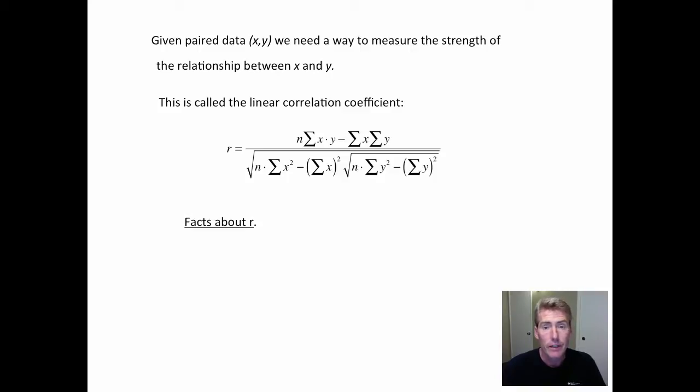So we're going to be given pairs of data, X and Y. And in order to measure the strength of the relationship, being a math class, we need some type of numbers to talk about. The test statistic is called the linear correlation coefficient. All right, hold on. Here it comes. Look at this formula. Yeah. So this is the reason that we are going to be using the graphing calculator.